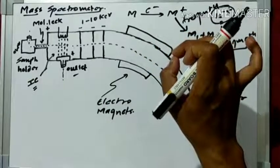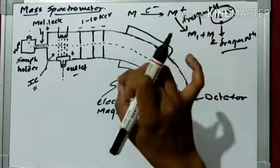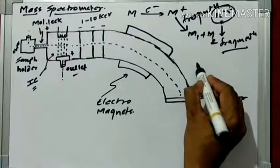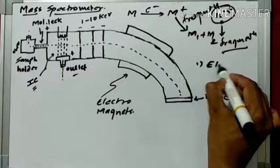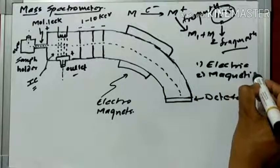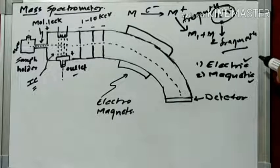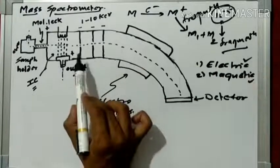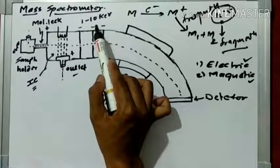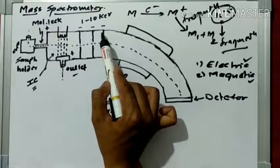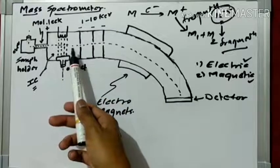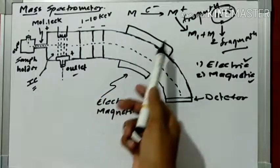In a mass spectrometer, two types of fields are applied. The first is the electric field, and the second is the magnetic field. I will show you where these fields are applied in the mass spectrometer. This electric field is applied using accelerating plates — we apply one to ten kiloelectron volts of potential across these plates. When a positive particle passes through this accelerating plate, these electromagnets provide the magnetic field.